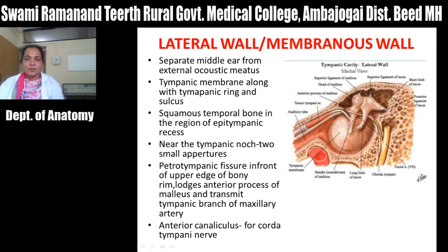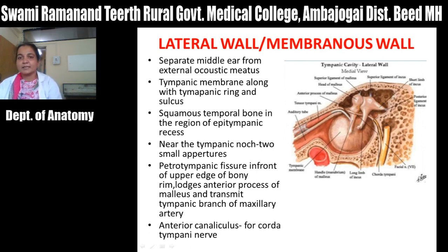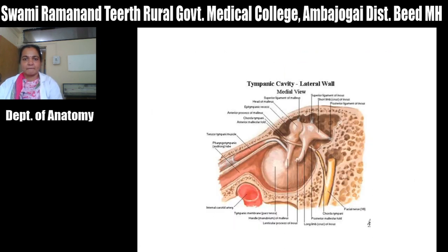In the lateral wall, between the membranous and fibrous layer, you can see the attachment of the handle of malleus. The head of malleus articulates with the incus, and this is the long process of the incus. There is the short process of malleus and anterior ligament of malleus, along with pars flaccida and pars tensa. Here you can see the posterior canaliculus, the facial canal, and the chorda tympani branch of the facial nerve enters the tympanic cavity and exits through the anterior canaliculus. The tympanic branch of the maxillary artery enters the tympanic cavity through the anterior canaliculus. This is the lateral wall, also called the membranous wall, formed by the tympanic membrane.